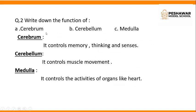Write down the functions of cerebrum, cerebellum, and medulla. Cerebrum controls memory, your thinking power, and controls all 5 senses. Cerebellum controls your muscle movement. And medulla controls the activities of organs like the heart.